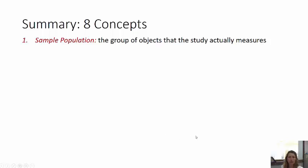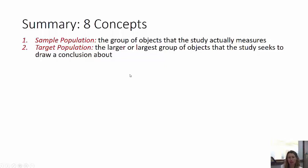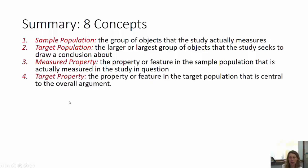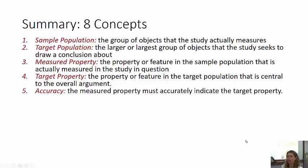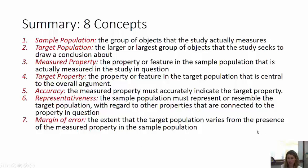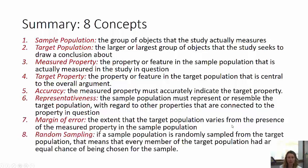Here's our summary of eight concepts. Sample population: the group or object the study actually measures. Target population: the larger group of objects that the study seeks to draw a conclusion about. Measured property: the property or feature in the sample population that is actually measured. Target property: the property or feature in the target population that is central to the overall argument. Accuracy: the measured property must accurately indicate the target property. Representativeness: the sample population must represent or resemble the target population with regard to properties connected to the property in question. Margin of error: the extent to which the target population varies from the measured property in the sample population. Random sampling: if a sample population is randomly sampled from the target population, every member of the target population had an equal chance of being chosen.